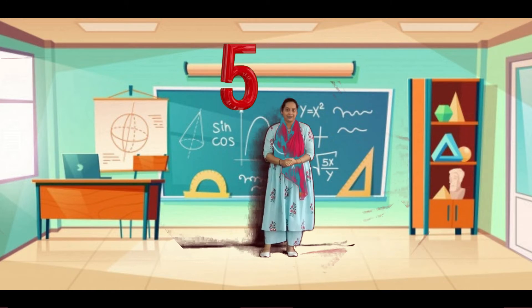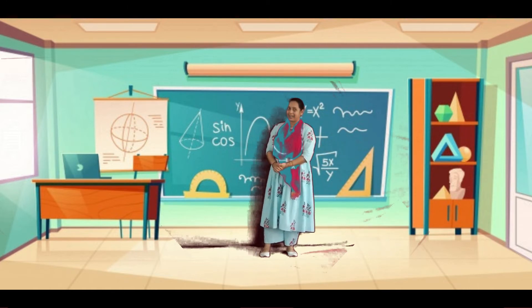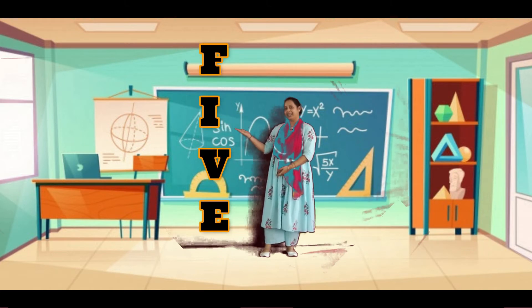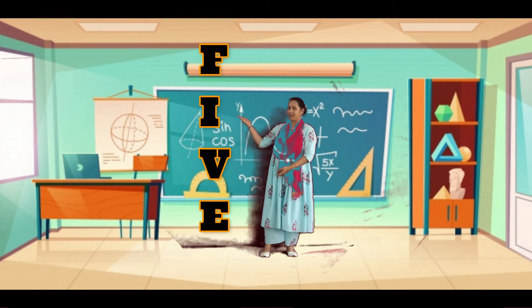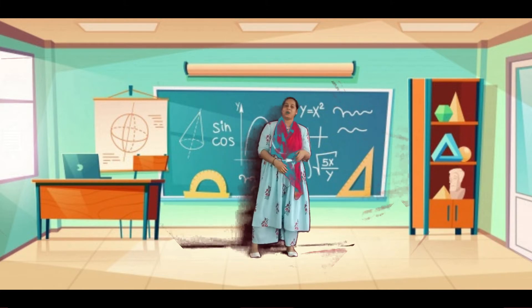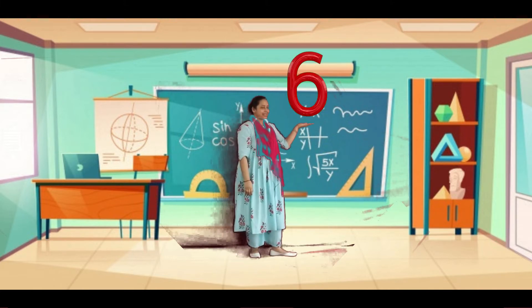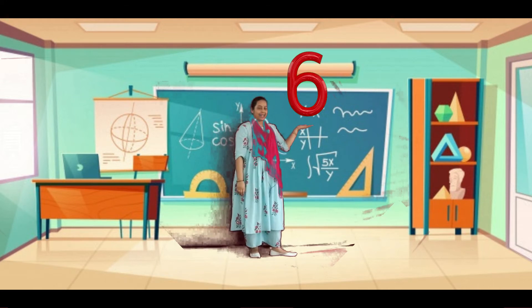Now let us learn the number. See the number Five. Five is spelling children — do you know? Very good children! Let us revise: F, I, V, E. Five.